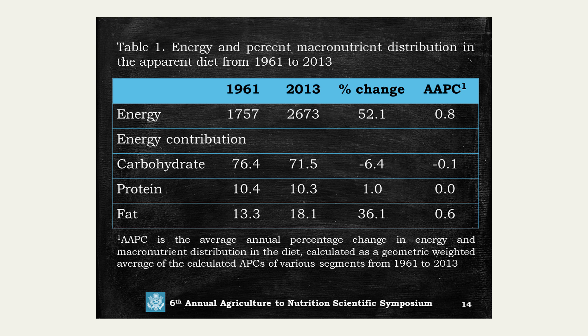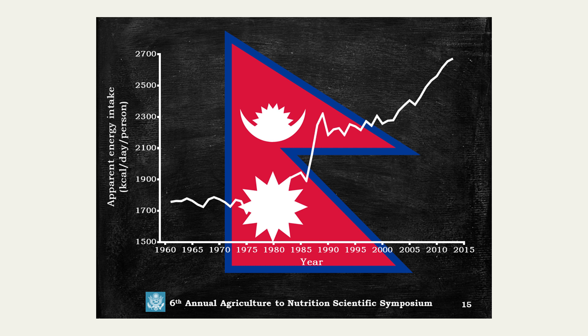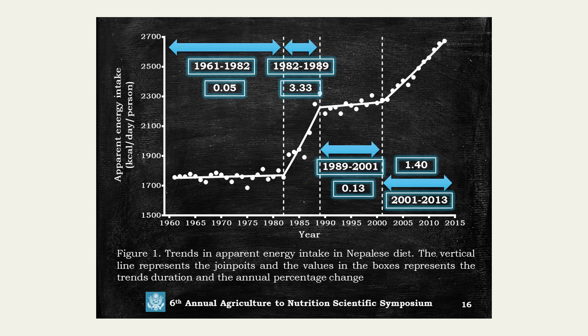In the case of Nepal, the energy availability changed by 52.1%. For the energy contribution from macronutrients, carbohydrate energy in the Nepalese diet from 1961 to 2013 changed by only 6.4%, protein energy changed by only 1%, and fat energy changed by about 36%. This shows how the apparent energy availability has changed in Nepal from 1961 to 2013.